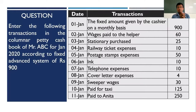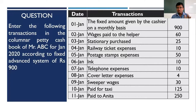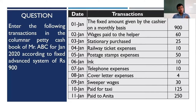The columnar petty cash book can be maintained in two ways - the format is the same but there are two systems: the fixed advance system and the imprest system. Here we will learn how to prepare according to the fixed advance system. One more important reminder: columnar petty cash book and analytical petty cash book are the same thing - the same format, the same type of petty cash book, just two different names given to it.